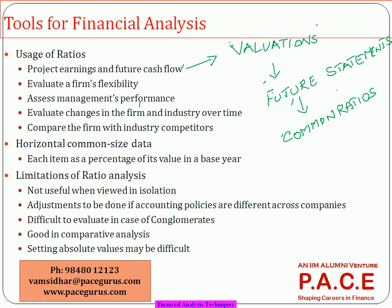The most common thing people use to prepare future financial statements is common ratios. Historically, they compute ratios for the last five years. If those ratios are very consistent, they will say for the future also, I will put the same number for the ratio. For example, if I look at a profitability ratio and for the last five years the company has been between 12% to 14% only.